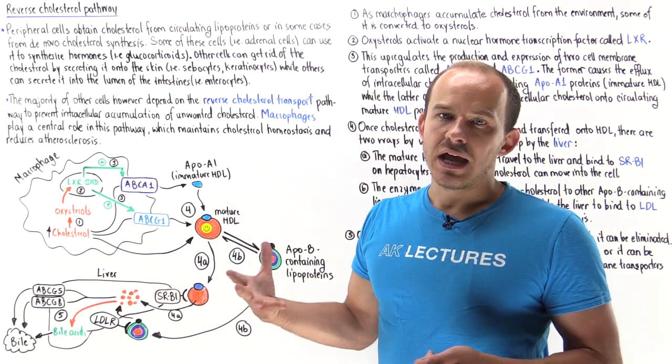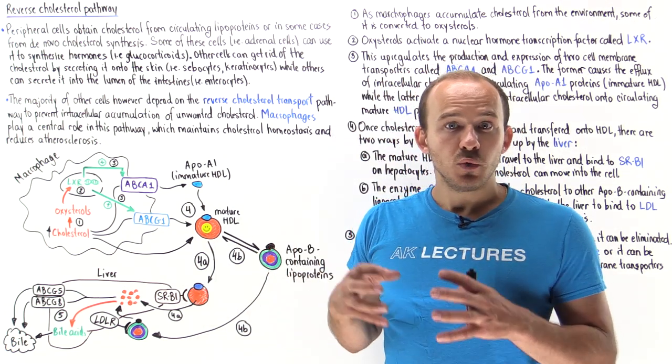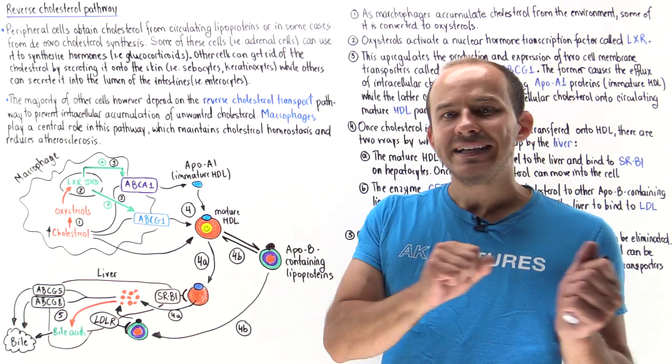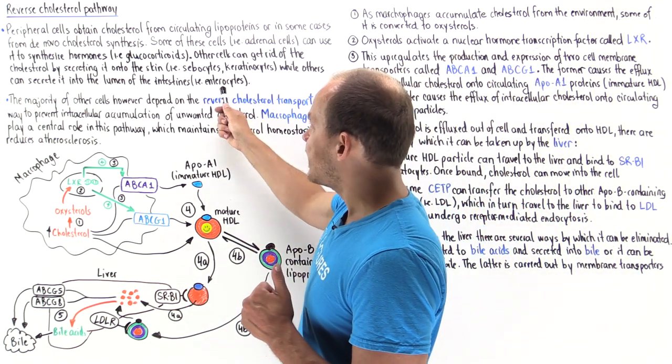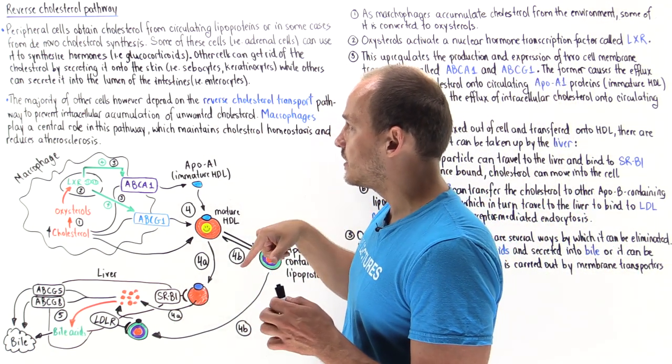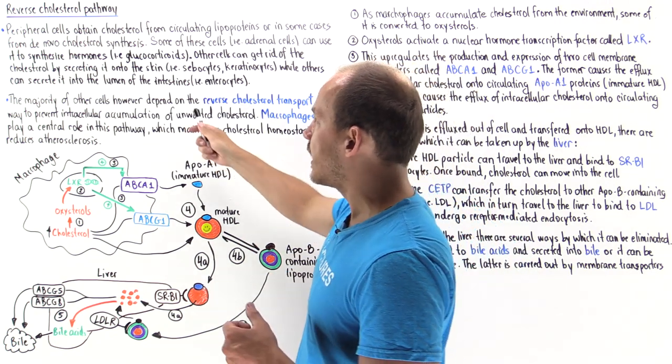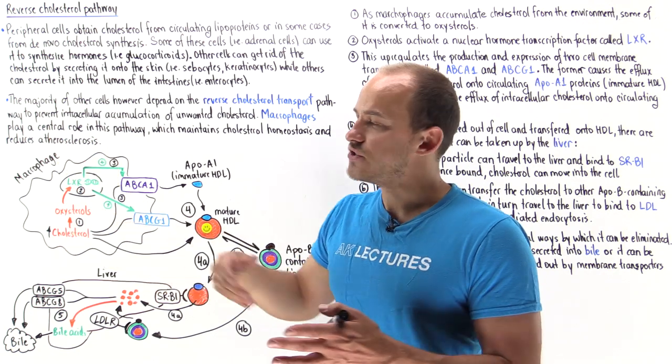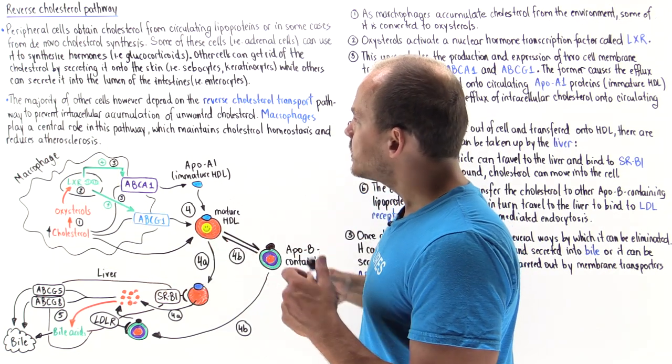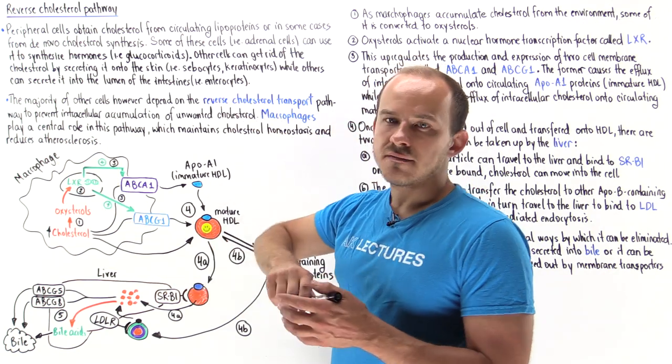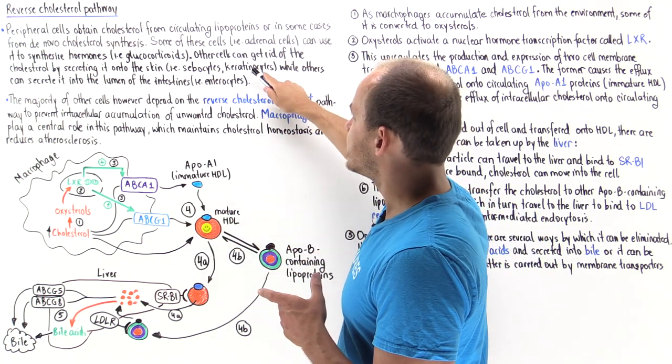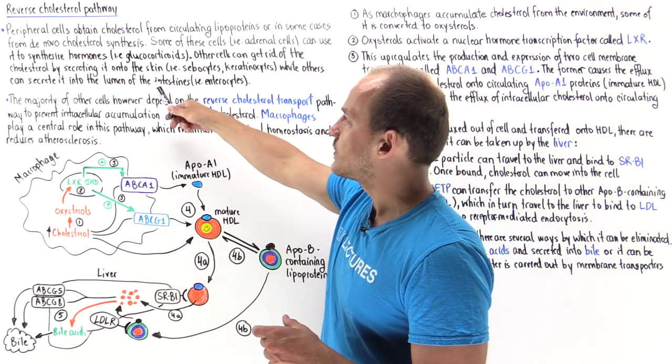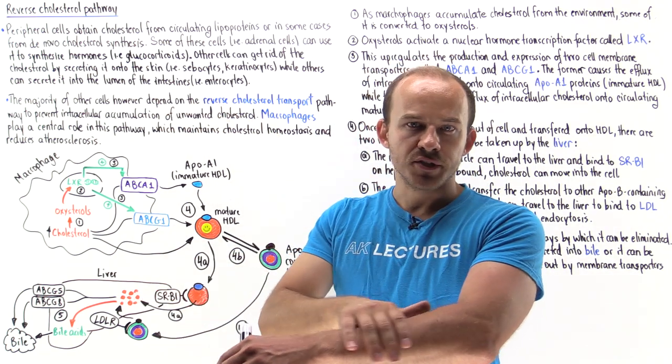In addition, other specialized cells of the body that don't need cholesterol can actually rid the cell of the cholesterol by dumping it outside. For example, enterocytes lining the intestines can simply secrete the cholesterol that is not needed into the lumen of the intestines, and that helps form feces. Other cells of the body, for example cells of the sebaceous glands and keratinocytes on the skin, can directly secrete cholesterol onto the surface of the skin.